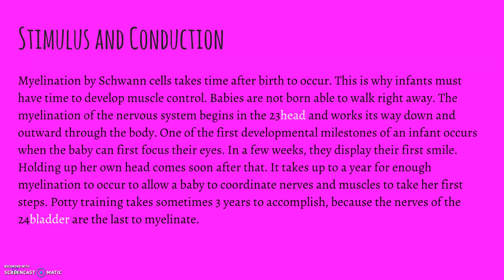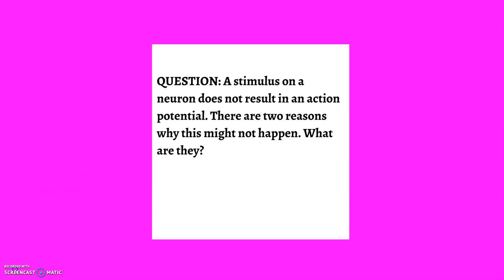Myelination by Schwann cells takes time after birth to occur, which is why infants have to have time to develop muscle control—babies aren't born able to walk right away. Myelination of the nervous system begins in the baby's head and works its way down and out throughout the body. One of the first developmental milestones occurs when a baby can first focus their eyes, then they display their first smile, then holding up their head. It can take up to a year before there's enough myelination for a baby to coordinate nerves and muscles to take their first steps. Potty training can take up to three years because the nerves of the bladder are the last to myelinate. A stimulus on a neuron not resulting in an action potential has two reasons—go back and look at your notes and write that down in your guided note sheet.